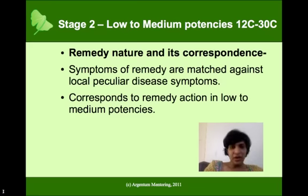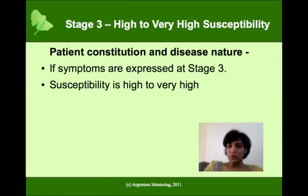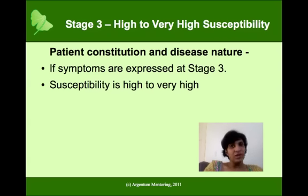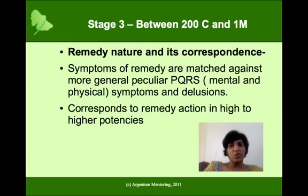Next, let's go to stage 3. Now in this case, if patients are expressing at stage 3, obviously they are expressing lots of peculiar general mental states quite well elaborated. Sometimes they could express wonderful dreams and delusions, and could express concomitants, and in this case you could get quite peculiar localized symptoms as well. So in such a case, the susceptibility is quite high, and you can actually consider giving remedies in high to very high potency, which could be between 200c to 1M.